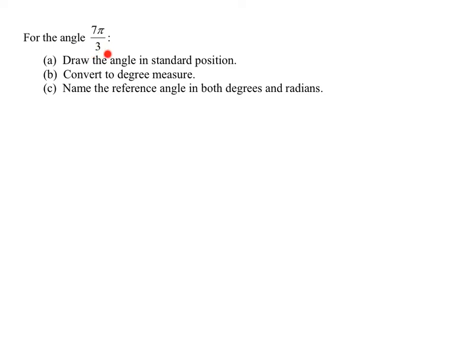In this problem, we're going to deal with the angle 7π over 3. Since there's no degree symbol, we know we're in radians. We need to draw the angle in standard position, convert it to degree measure, and then name the reference angle in both degrees and radians.